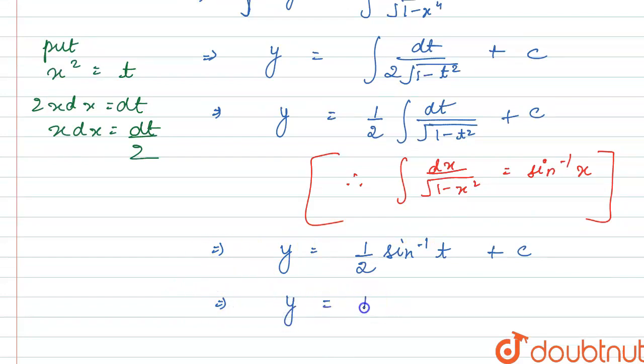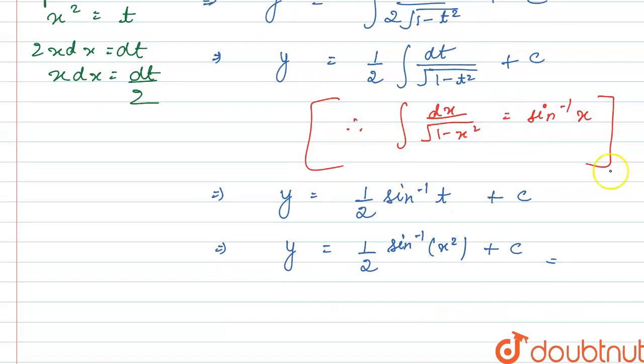Now again just put the value of t as x square, so this will become y is equals to 1 by 2 sine inverse of x square plus constant c. So this is the required solution of the given differential equation.